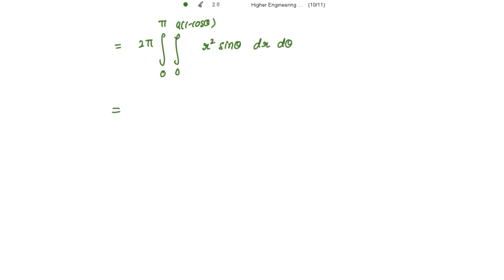So integrating first with respect to r, with respect to r sin theta is constant. So what is the integration? It is r cube over 3 and sin theta is multiplied. The limits are from 0 to a into 1 minus cos of theta d theta.